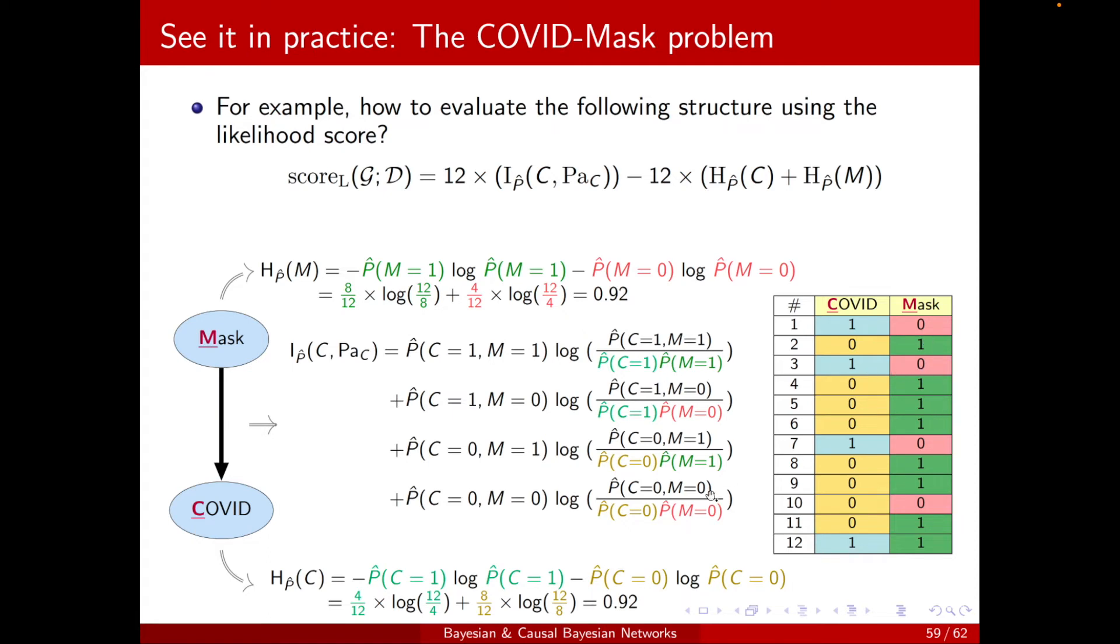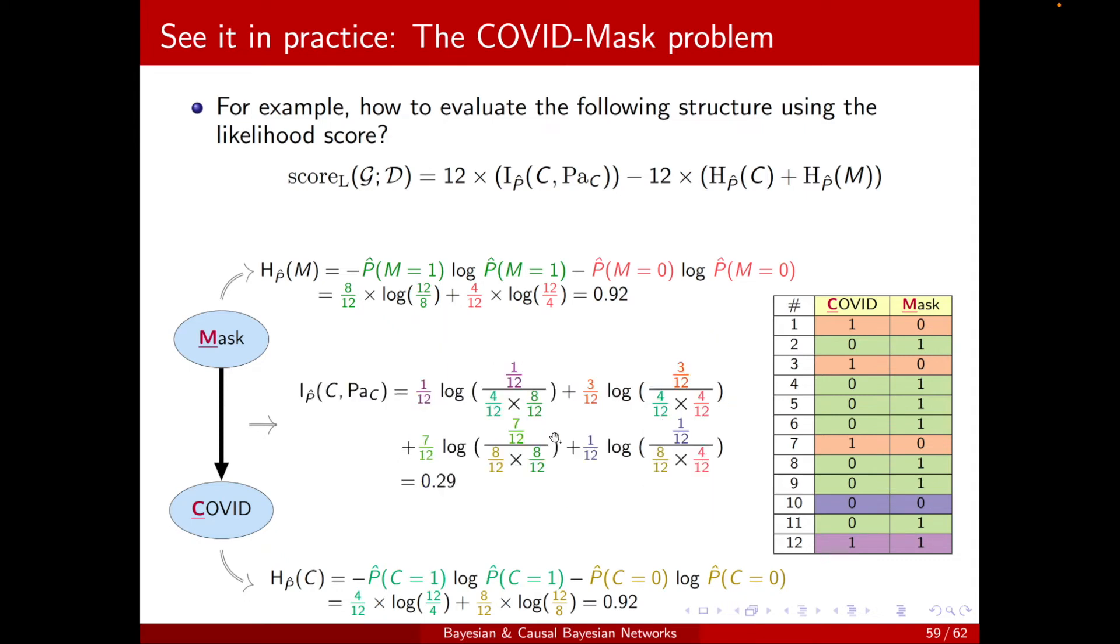Again, color-coded. You can see that from here, we can easily get to the numbers here, and if you do the math, you will get 0.29. If I plug in the values, I will get this term, which is minus 18.6, and this is the likelihood score of this structure. Great.